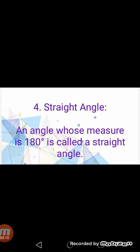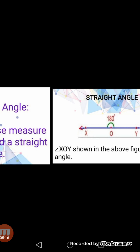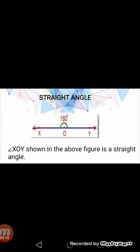Number four — Straight angle. An angle whose measurement is 180 degrees is called a straight angle. See the diagram: angle XOY shown in the figure is a straight angle because its measurement is 180 degrees. Also keep in mind that a straight angle is equal to the addition of two right angles, meaning 90 degrees plus 90 degrees equals 180 degrees.